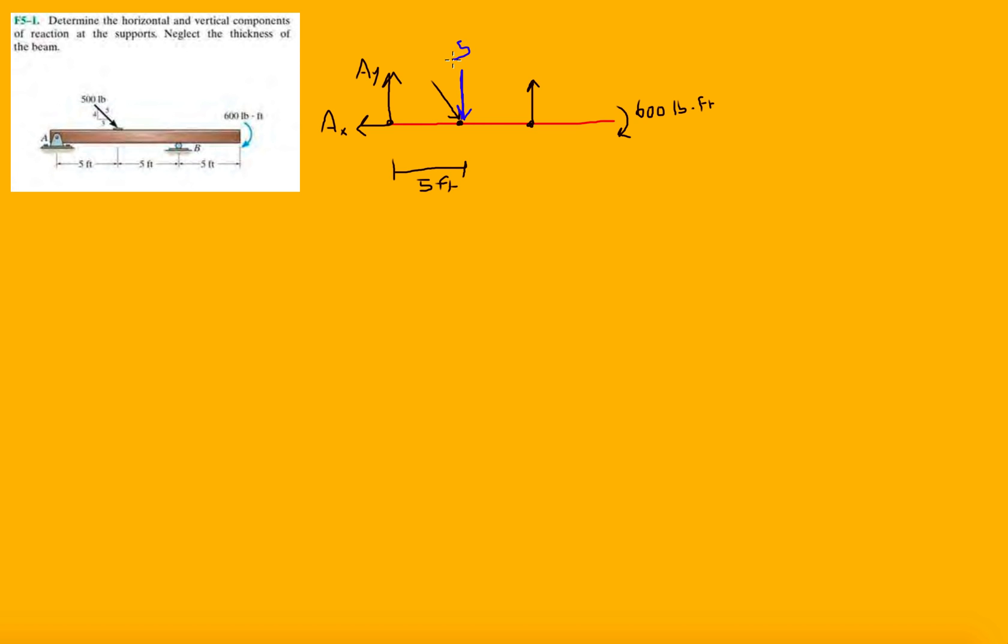We know that this force has two components, one in the X and Y. So whenever we see a force that's not aligned with the X and Y axis, we're going to break it down like we've done in the past. We know this is 500 times 4 fifths. And then we have the X component of this force. And I drew a little stick as the beam because it says neglect the thickness of the beam. And then this will be 500 times 3 fifths. And this is a 5, 4, 3.